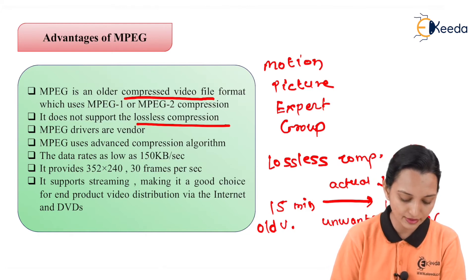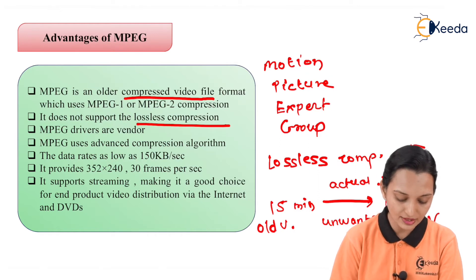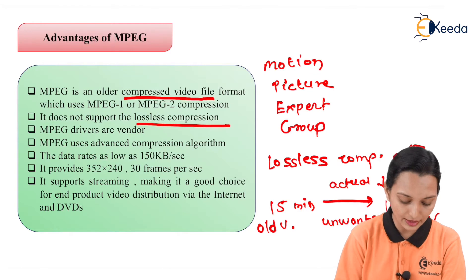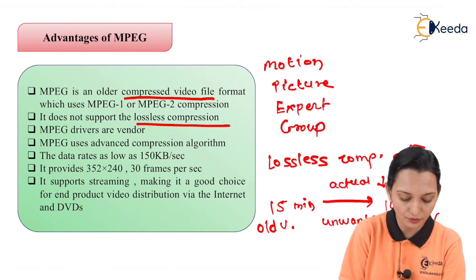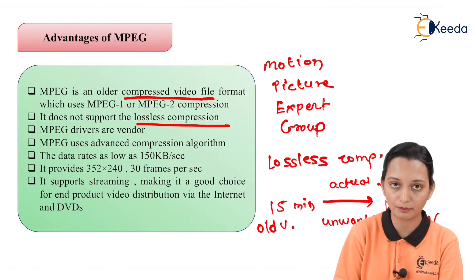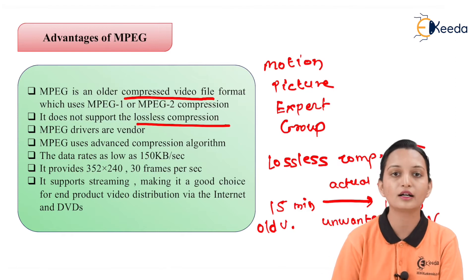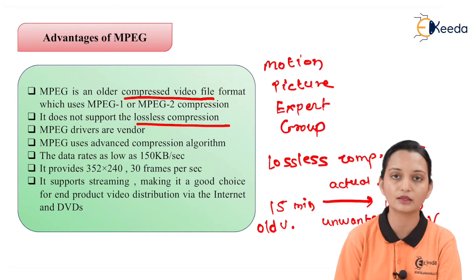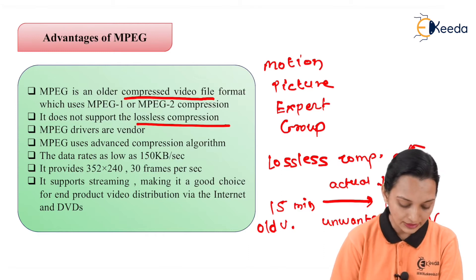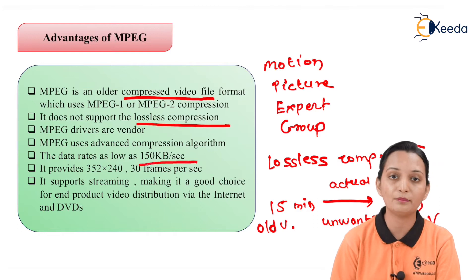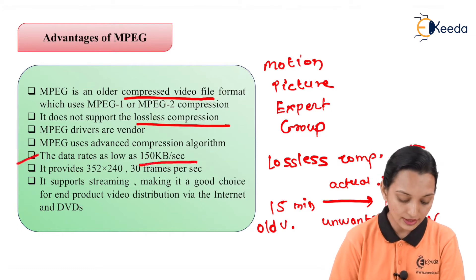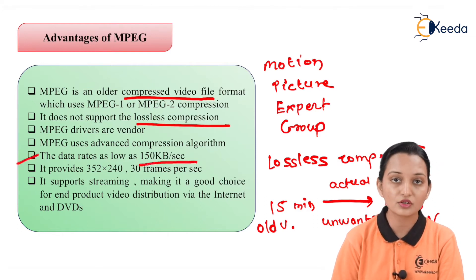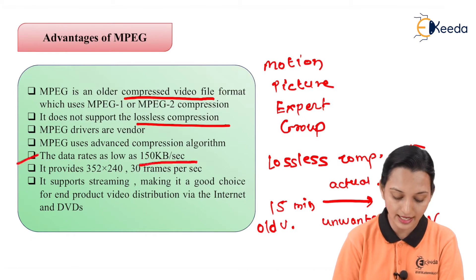The third advantage is that MPEG uses an advanced compression algorithm. MPEG started as an older compression format using MPEG 1 and MPEG 2, but nowadays advanced MPEG technology is available. A key benefit is that the data rate can be as low as 150 KB per second, which is one of the most favorable advantages of MPEG.